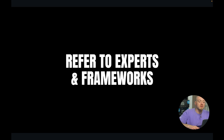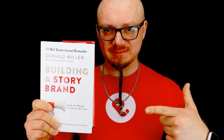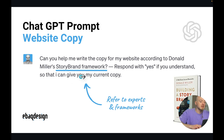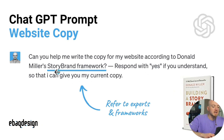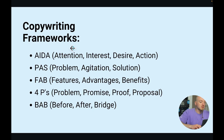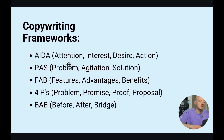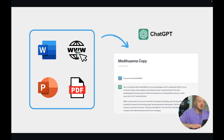The next step is to refer to experts and copywriting frameworks. Use this ChatGPT prompt: 'Hey, can you help me write copy for my website according to Donald Miller's StoryBrand framework? Respond with yes if you understand so I can give you my current copy.' It doesn't have to be this framework — it could be any popular one. Other well-known frameworks include AIDA (Attention, Interest, Desire, Action) and the PAS framework.